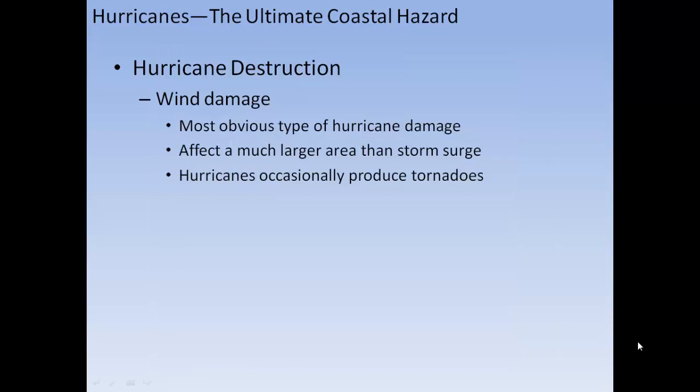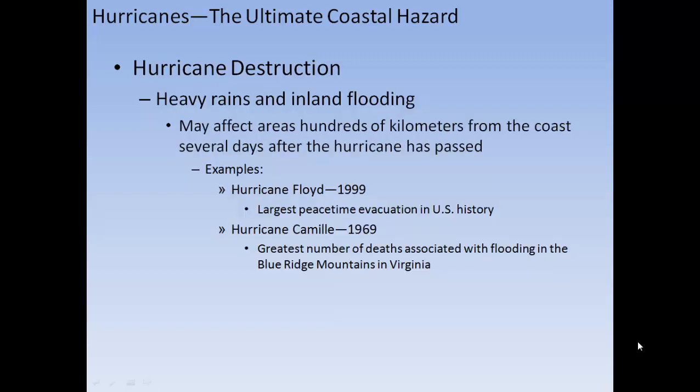Wind damage is the most obvious type of hurricane damage and affects a much larger area than storm surge. Hurricanes occasionally produce tornadoes, and heavy rains and inland flooding may occur hundreds of kilometers from the coast, days after the hurricane has passed. For example, Hurricane Floyd in 1999 caused the largest peacetime evacuation in U.S. history, and Hurricane Camille in 1969 caused the greatest number of deaths from flooding in the Blue Ridge Mountains of Virginia.